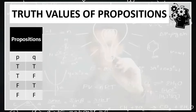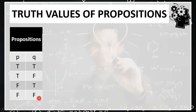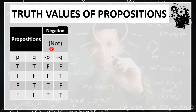So if we have two propositions P and Q, we have all the possible combinations of truth values: T-T, F-F, T-F, F-F. In negation, it denies the truth of the given proposition. That is, when a proposition is true, its negation is false, and if the proposition is false, its negation is true.